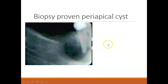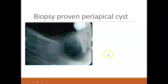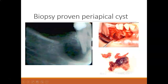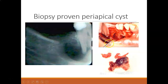Here is a biopsy-proven periapical cyst — a biopsy confirmed it was a cyst, not an infection. They excised and took out the cyst. It was opened up and removed, and oftentimes the area will fill back in with bone.